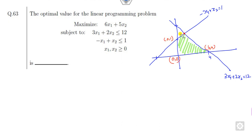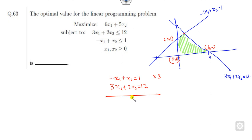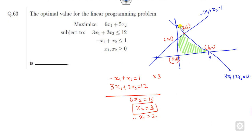We can find the intersection point from the equations. Adding 3x₁ plus 2x₂ = 12 after multiplying appropriately, we get 5x₂ = 15, so x₂ = 3. Substituting back, x₁ = 2. So the intersection point is (2, 3).